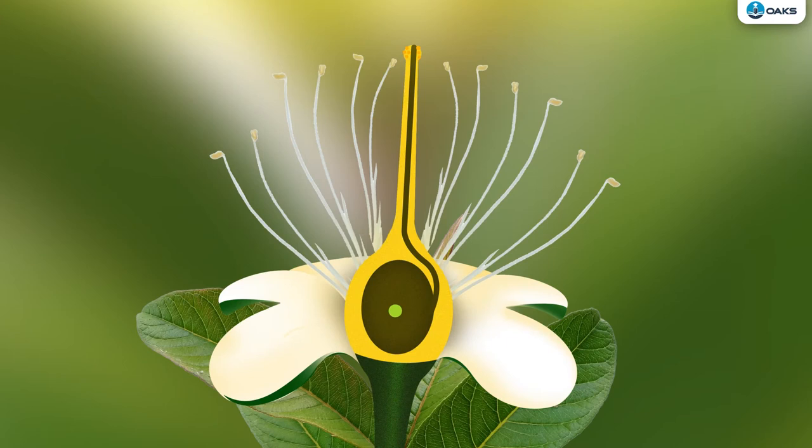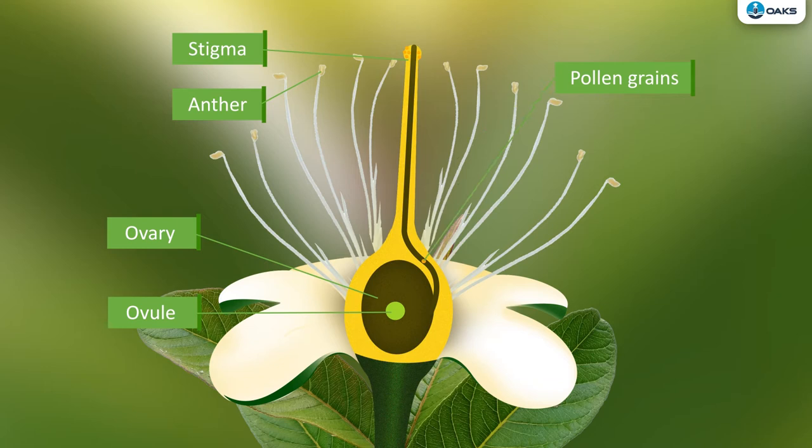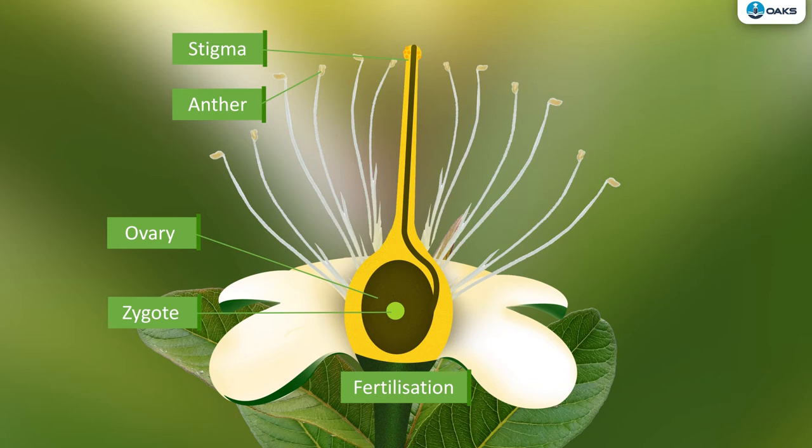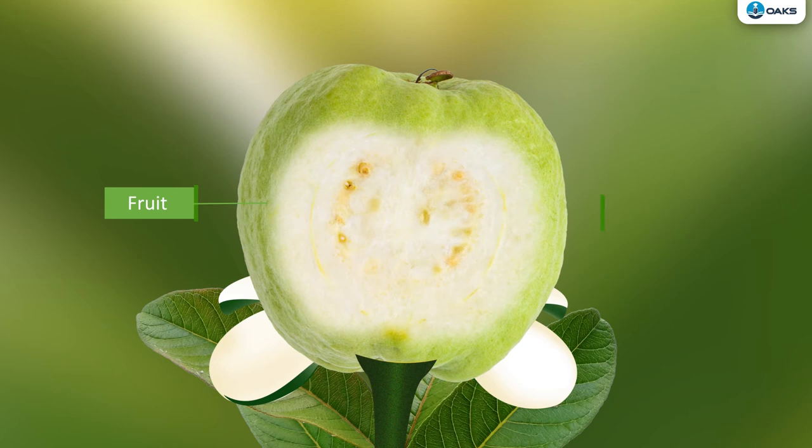Upon pollination, the pollen grain germinates and transfers the male gamete into the ovule. The male gamete then fuses with a female gamete to form a single cell called a zygote. This process is called fertilization.